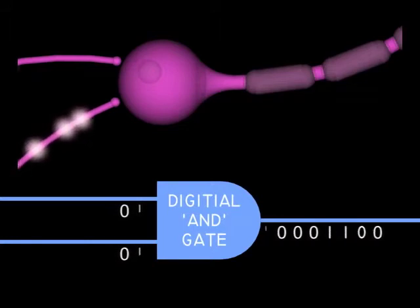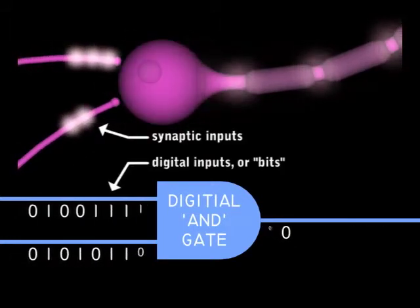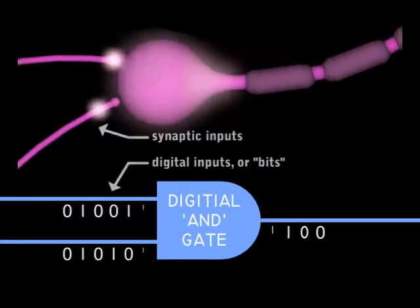A neuron is often compared to digital logic where synaptic inputs are interpreted as digital inputs. Perhaps, but this is where the similarities end.